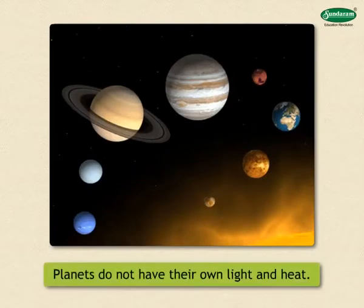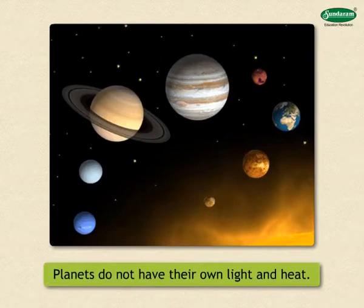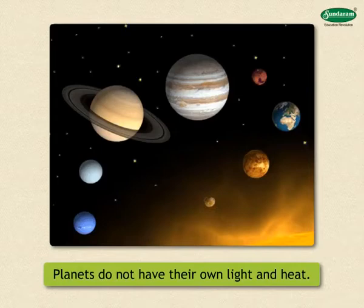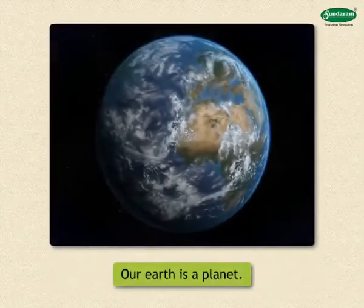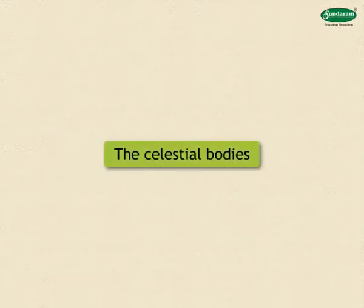Some celestial bodies do not have their own light or heat. These are called planets. A planet is illuminated by some other source. Our Earth is a planet.